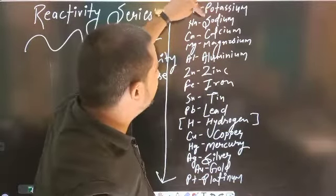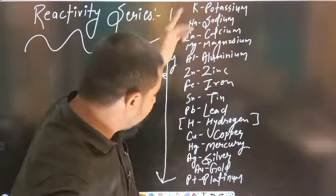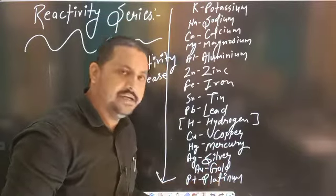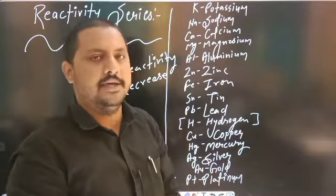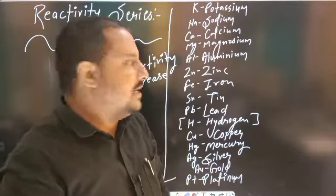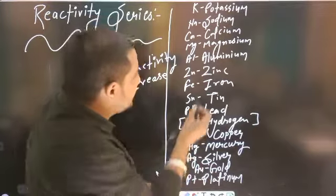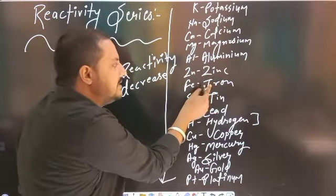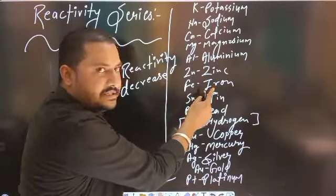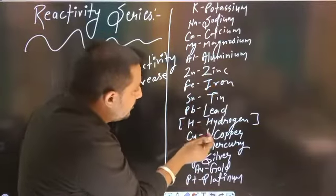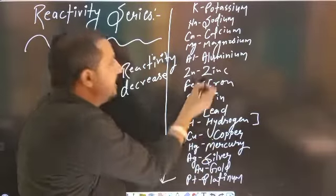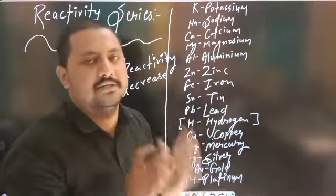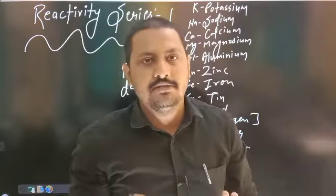Metals ki sabse kam reactivity silver, gold, platinum in metals ki hai. To is prakar aap dekhiye — jaise zinc iron ki upar raha hai, matlab zinc ki reactivity iron se zyada hai. Toh zinc displace kar sakta hai. Dekhiye copper se upar raha hai zinc aur iron dono — toh ye copper ko displace kar sakte hain.